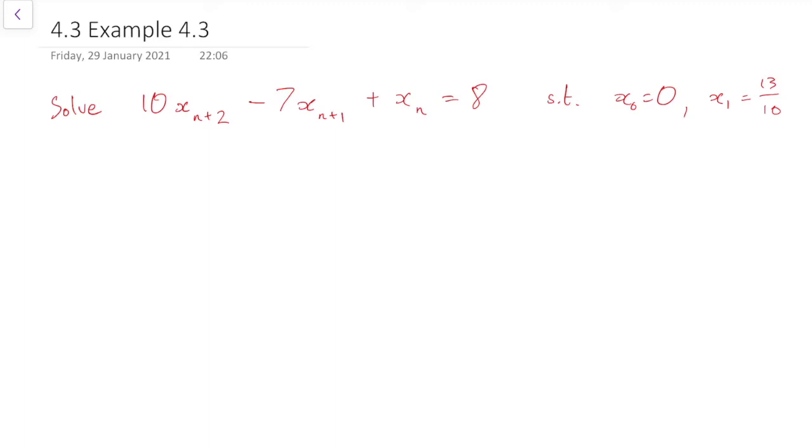Okay, so this is the example to solve this inhomogeneous equation, because it's got an 8 on the right-hand side. So as you'll have read, step 1 is to ignore the 8 on the right-hand side and get the general solution to the homogeneous version, with just a 0 there.